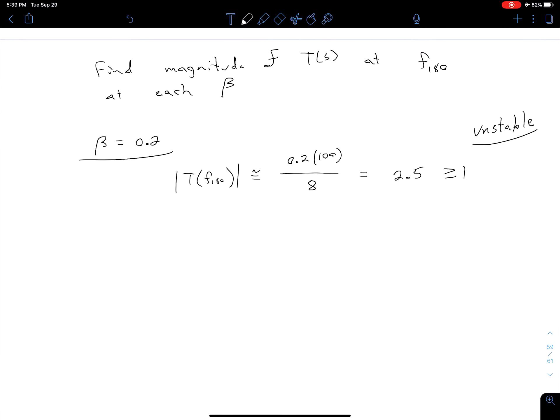So let's then look at our beta of 0.02. Again we're saying our magnitude at this negative 180 degree frequency, that makes that denominator approximately eight, now we have 0.02 for our beta, that 100 is there as part of our loop gain function, and in this case we have 0.25 which is less than one so in this case our system is going to be stable.